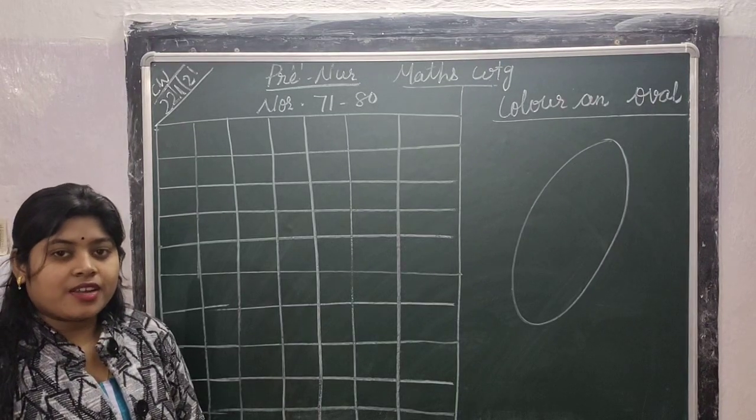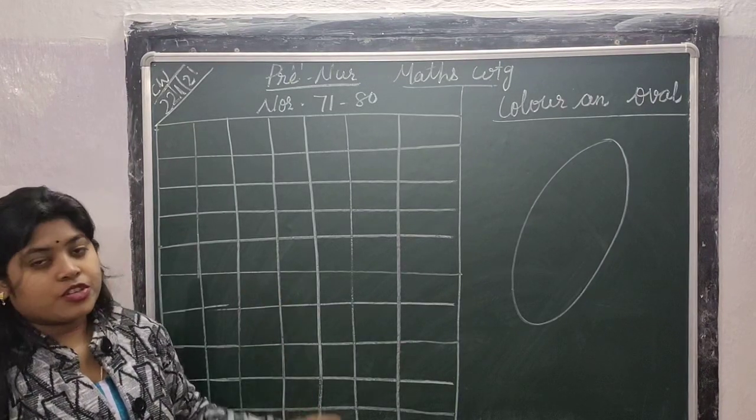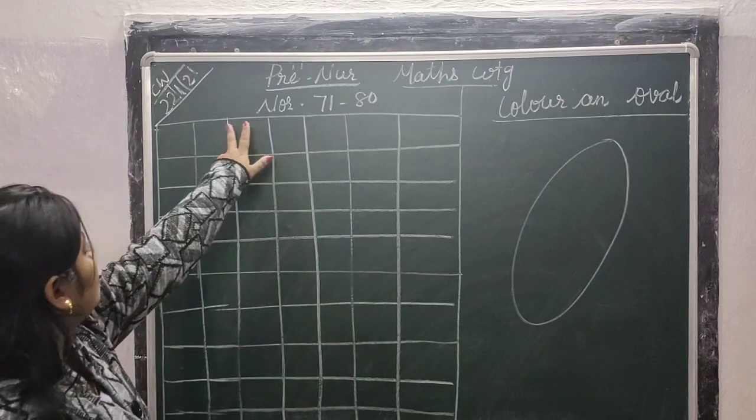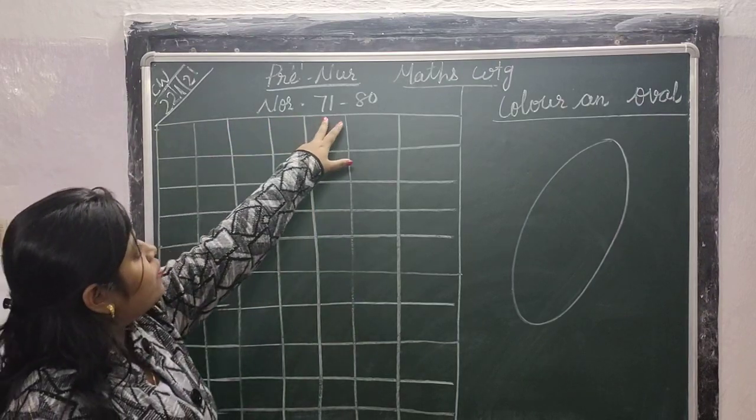Very good morning pre-nursery children. Today we will do math writing. So children, you will write number 71 to 80.